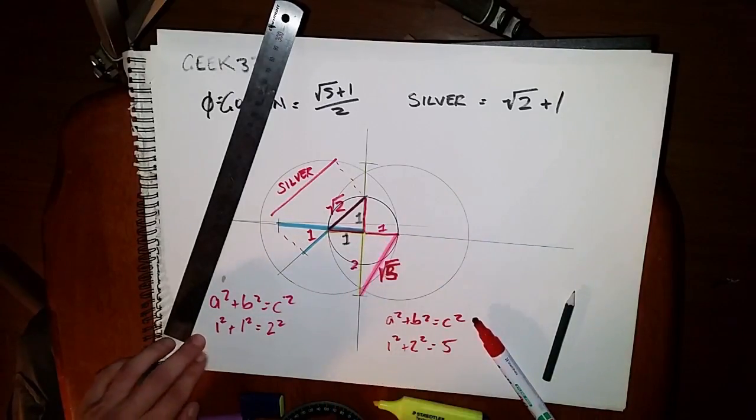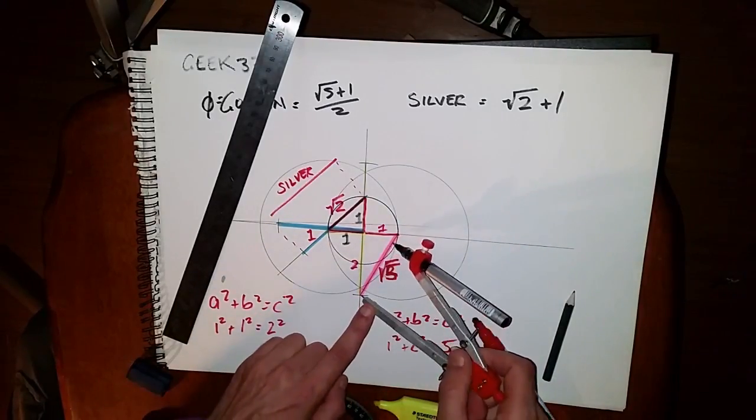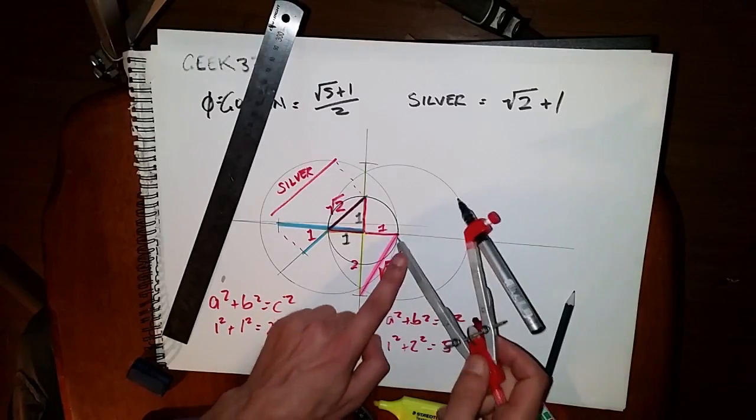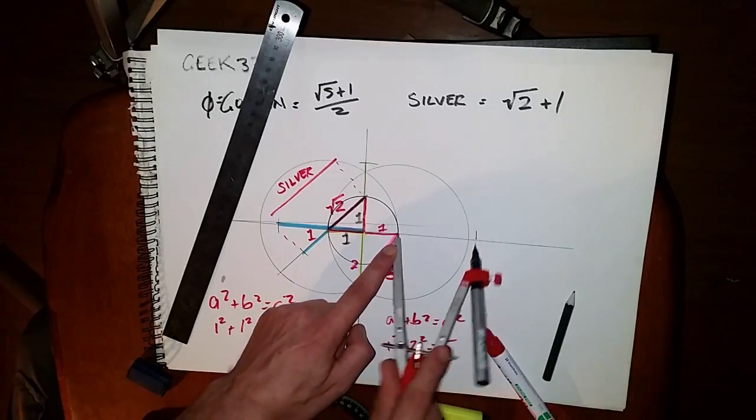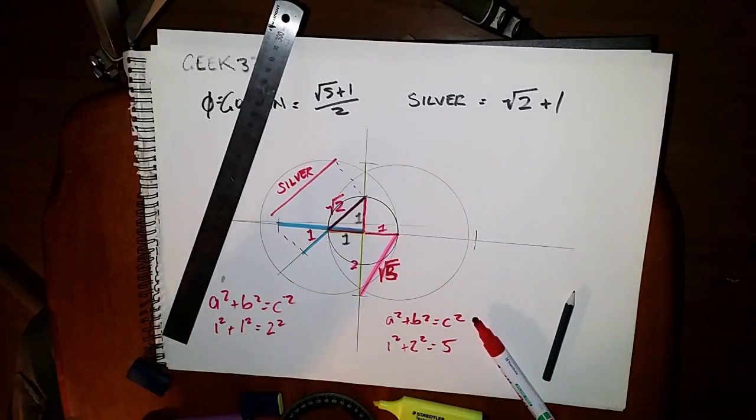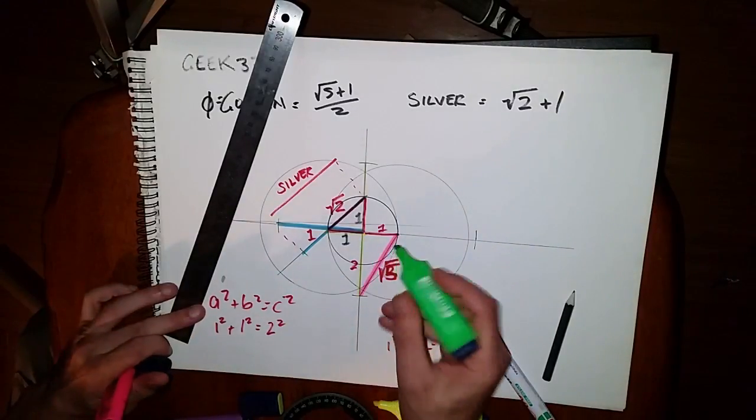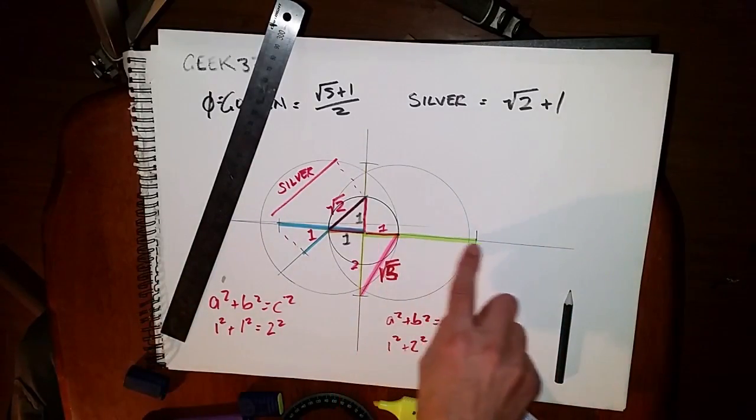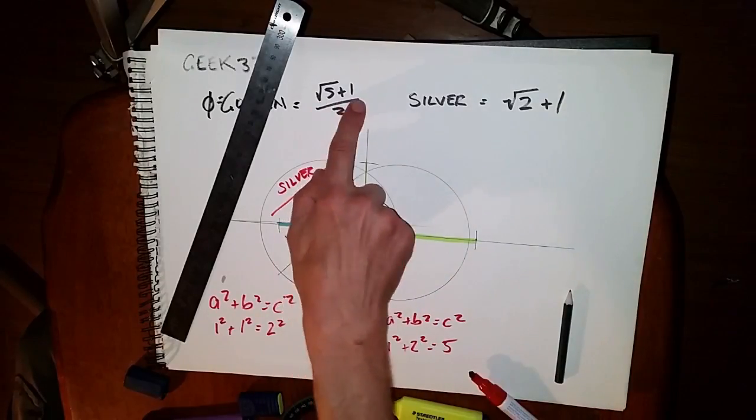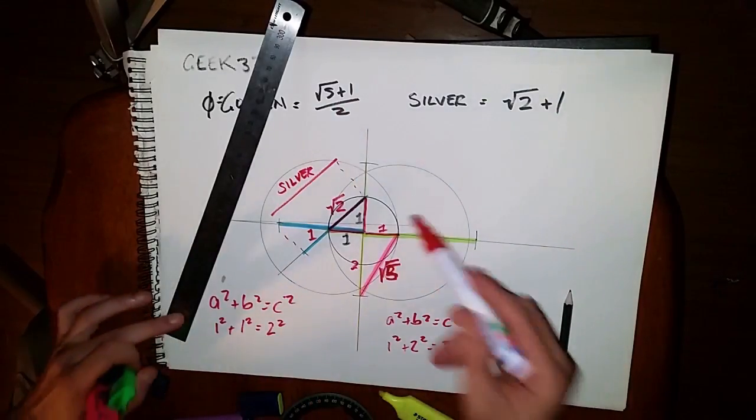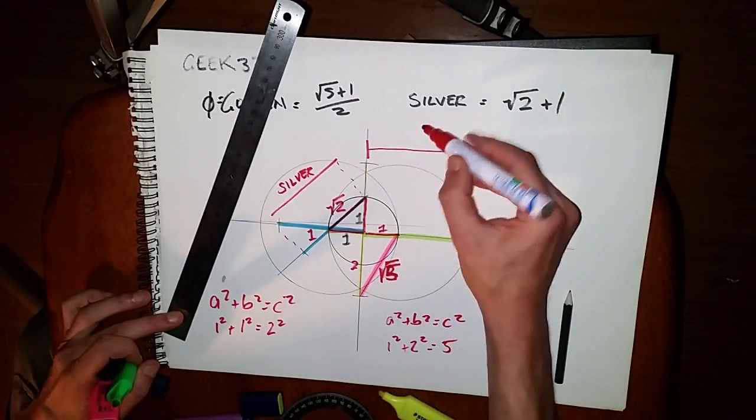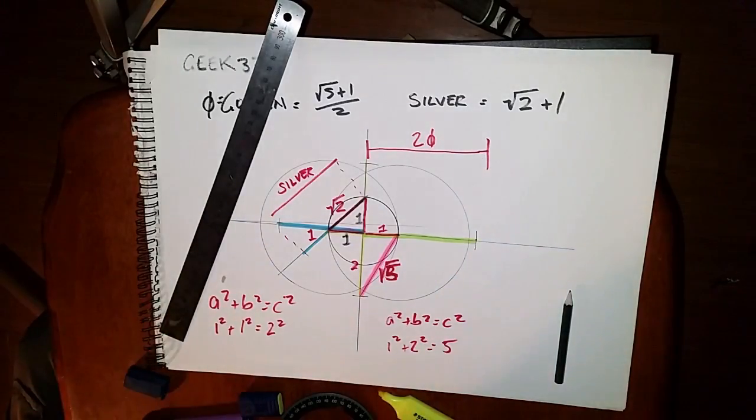So we already have 1, so now we set our compass to the square root of 5, mark that off. And so now this portion of line is the square root of 5 plus 1. So this portion is now 2 phi, or the golden ratio times 2.